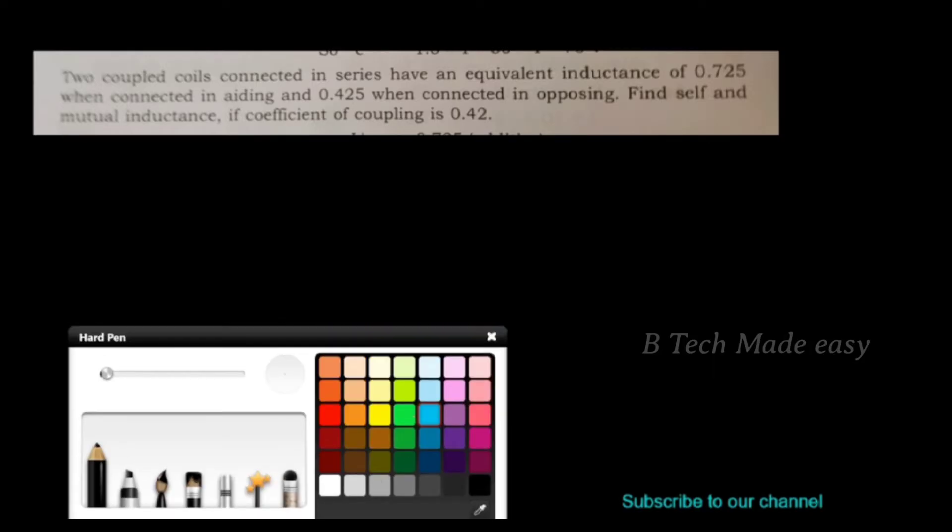Two coupled coils connected in series. The equivalent inductance when connected in series aiding is equal to 0.725 Henry.